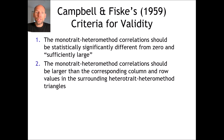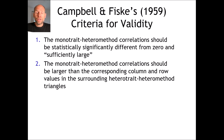The second criterion is also about the mono-trait heteromethod correlations and states that those should be larger than the corresponding column and row values in the surrounding hetero-trait heteromethod triangle. That sounds fairly complicated and we will understand this better when I show you the actual matrix and how that criterion is applied.